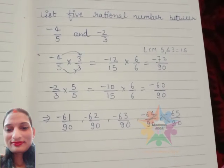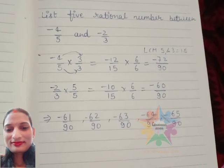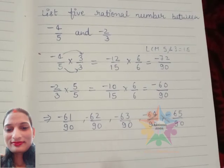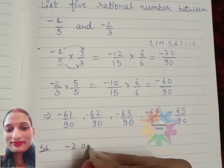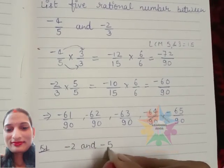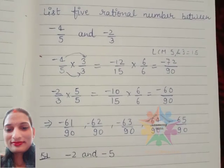And the last is -65/90. This will be the answer of this question if you need to list 5 rational numbers between -4/5 and -2/3.